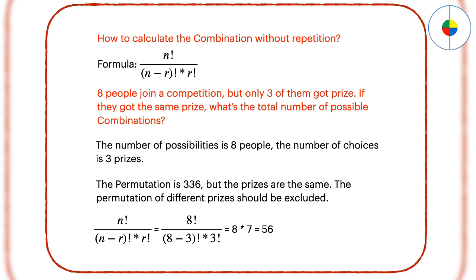How to think about this? You already know that if the prizes are different, the permutation is 336. However, the prizes are actually the same, so the order of the 3 prizes is not important, and we should exclude those permutations, which is 3 factorial. So the answer will become 56.